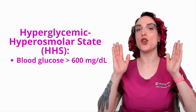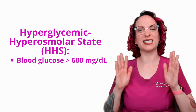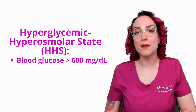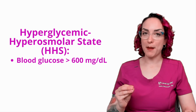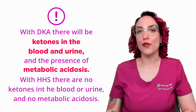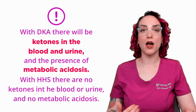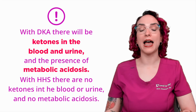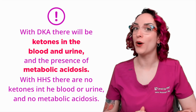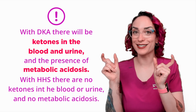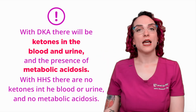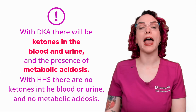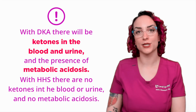It's not just about what the blood sugar level is — it's about what's going on on a metabolic level with your patient. With DKA, there will be ketones in the blood and/or urine, and your patient will be experiencing a state of metabolic acidosis. It's in the name: diabetic ketoacidosis — ketones and acidosis. Versus HHS, the patient will have no ketones in the blood or urine and will not experience metabolic acidosis.